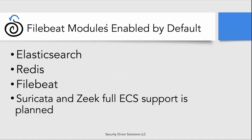We've enabled a few of these modules by default, including some new ones. With the Elasticsearch module, we'll now grab Elasticsearch logs from the Security Onion infrastructure and those will be indexed into Elastic. You'll also see Redis events and FileBeat. We did not pull Suricata and Zeek to full ECS support yet — we're still working with Elastic to find a way to merge those a little differently so that we can pivot easily.